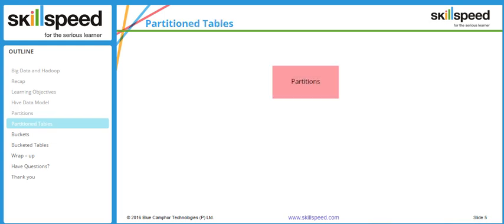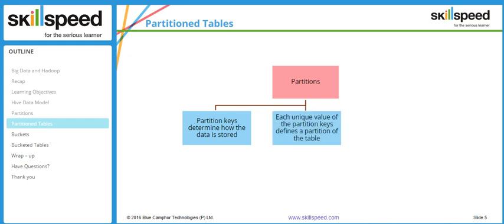The partition has three key properties. Partition keys determine how the data is stored. When creating a partitioned table, it is very important to understand that the table heavily depends on what key you are using for the partition. For example, if you partition a table based on month and then query the entire data based on another column such as country, it has no effect — in fact, it makes your query slower because the data is partitioned by month but you are querying by country. So the partition key is the most important concept here. Each unique value of the partition key defines a partition of the table, so when you have 12 values, you will get 12 partitions, and partitions are named after dates for convenience.